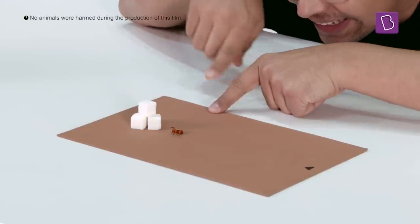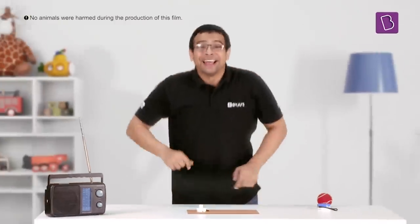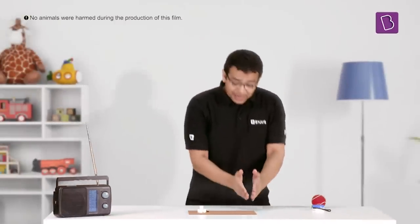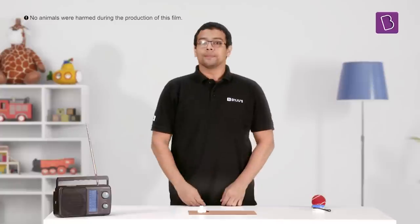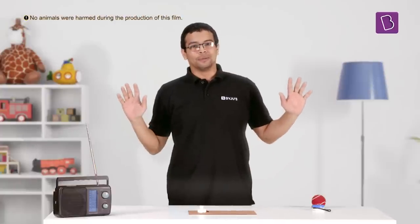17, 18, 19, 20. It took 20 ant lengths for the ant to reach from this starting point to the sugar cubes. Hey, no ants were harmed during the filming of this video.